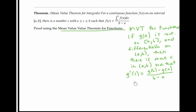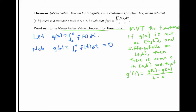Let's keep the mean value theorem for functions in mind and turn our attention back to the mean value theorem for integrals. I'm going to define a function G of x to be the integral from a to x of f of t dt, where f is the function given to us in the statement of the mean value theorem for integrals. Notice that G of a is just the integral from a to a, which is zero, while G of b is the integral from a to b of our function.